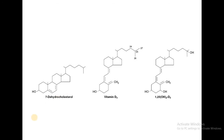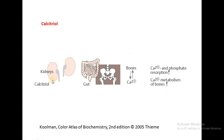This slide shows the structural comparison: 7-dehydrocholesterol is converted to vitamin D3. The 25-position hydroxylation occurs in the liver and the 1-position hydroxylation in the kidney, giving the active form. Calcitriol's functions include increasing calcium and phosphate resorption, and also increasing calcium metabolism in bones.